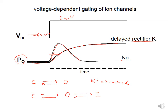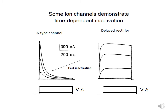Inactivation is the process in which the channels go to a non-conducting state even when the cell is depolarized. For the delayed-rectifier, there is very little inactivation when the cell is depolarized. For sodium channels, and also for some potassium channels, when the cell remains depolarized, the channel shows an inactivation process. We call this fast inactivation because it occurs on a time scale of a few milliseconds to at most 100 milliseconds. The class of potassium channels that display this type of inactivation is called A-type potassium channels.